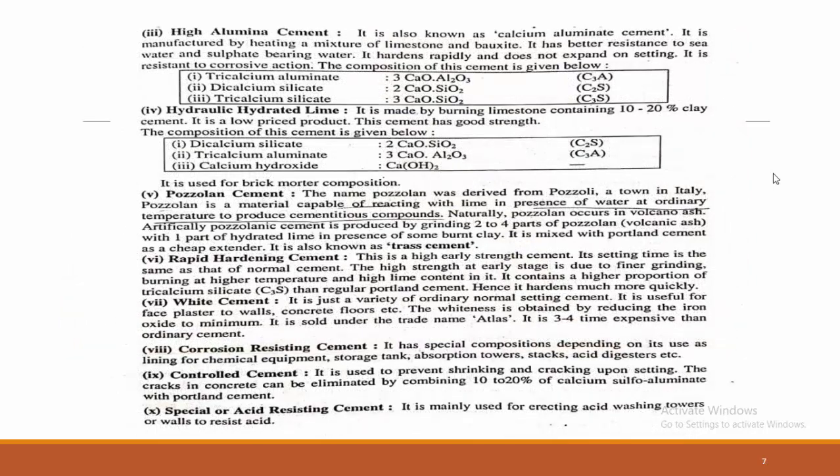Next is high alumina cement, also known as calcium aluminate cement. It is manufactured by heating a mixture of limestone and bauxite — that is alumina — and its composition includes tricalcium aluminate (C3A), dicalcium silicate (C2S), and tricalcium silicate (C3S). Hydraulic hydrated lime is made by burning limestone containing 10 to 20% of clay. Pozzolan cement takes its name from Pozzuoli, a town in Italy. Pozzolan is a material capable of reacting with lime in the presence of water at ordinary temperature to produce cementitious compounds, and it occurs naturally in volcanic rock.